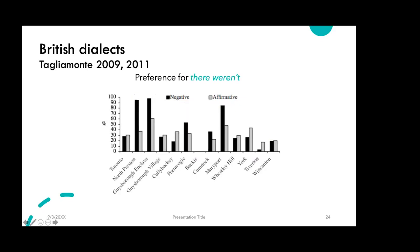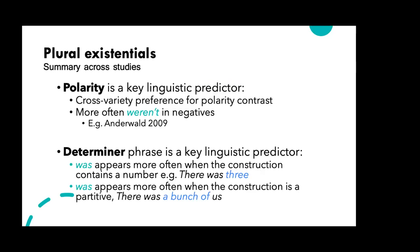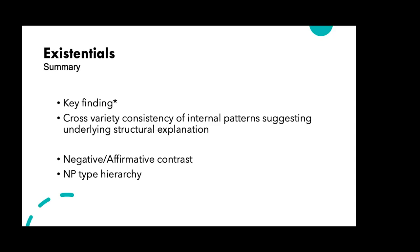To summarize across these studies, two key linguistic contrasts dominated: polarity and the nature of the determiner phrase. The non-standard form 'was' appears more often when the construction is affirmative and when the determiner phrase contains a negative quantifier, a numeric quantifier, or a partitive. A key finding was also the extent of the consistency of the two internal patterns — the negative/affirmative contrast and the NP-type hierarchy — suggesting an underlying structural explanation.